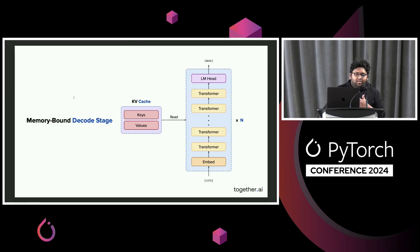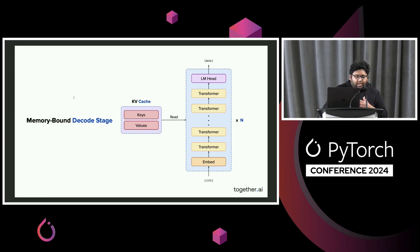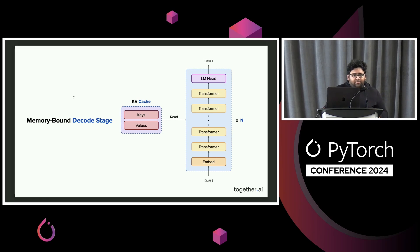Then you transition from the initial prefill stage to something that is a repeated series of decodes, which is primarily memory-bound. You're dealing with a lot of skinny matrix multiplications and retrieving a long KV cache. All of that puts you in a regime where you have a lot more data movement than computation.